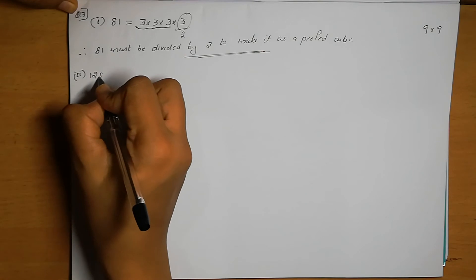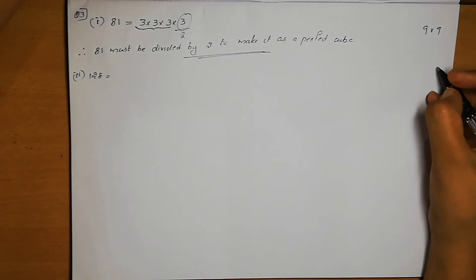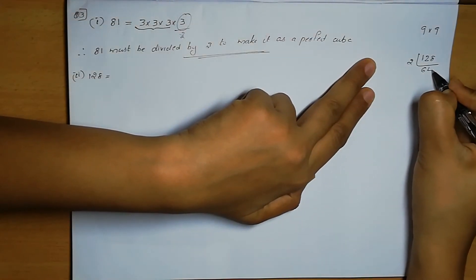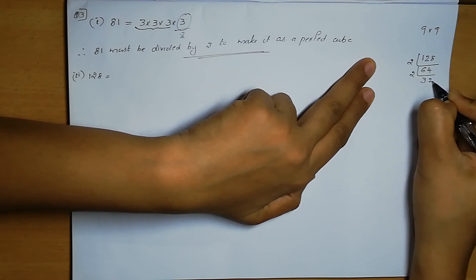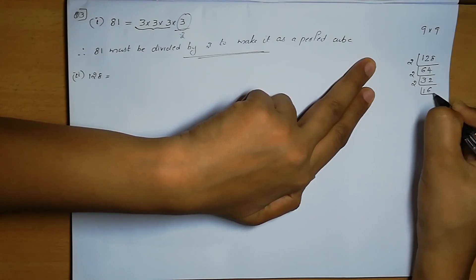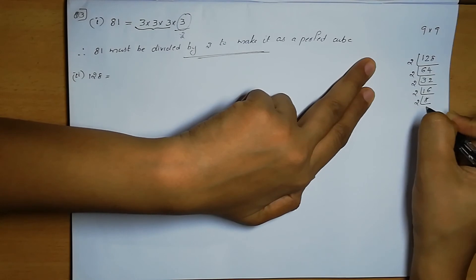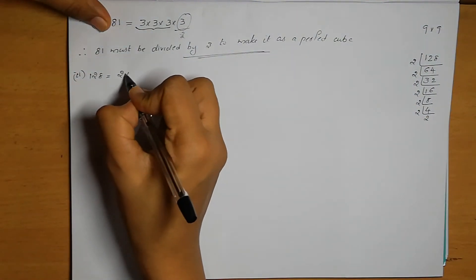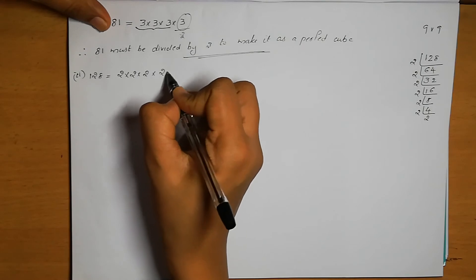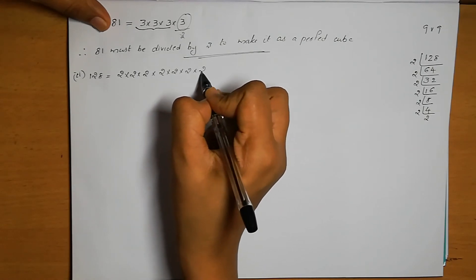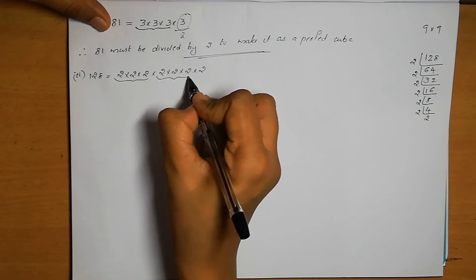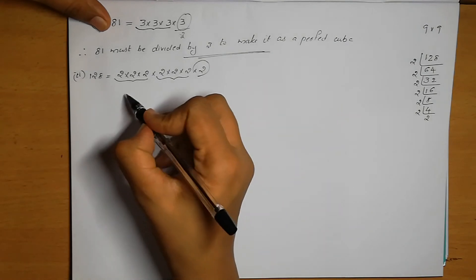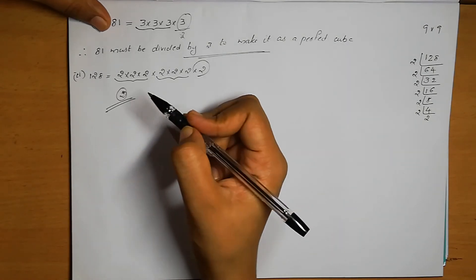Second number is 128. Its prime factors are 2 × 2 × 2 × 2 × 2 × 2 × 2. We have two triplets of 2, but one extra 2 remains. Therefore, 128 must be divided by 2 to make it a perfect cube.